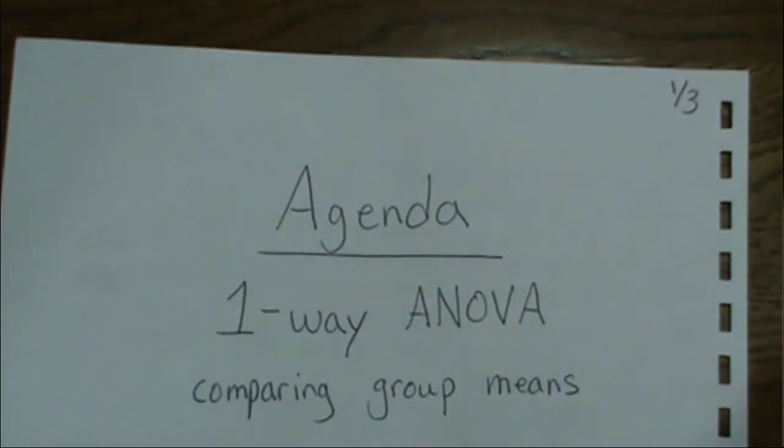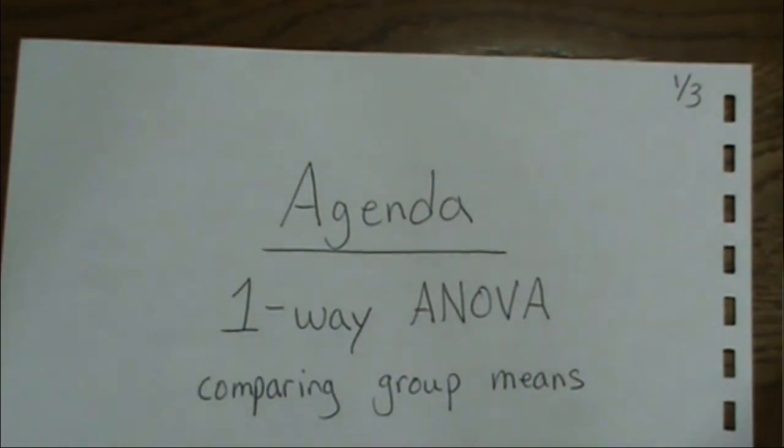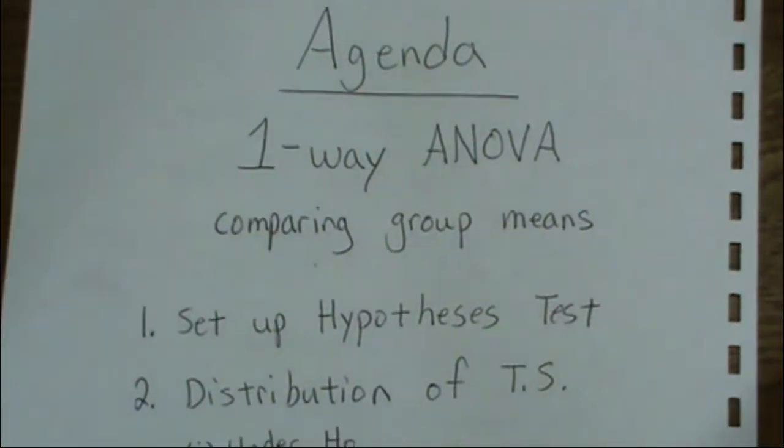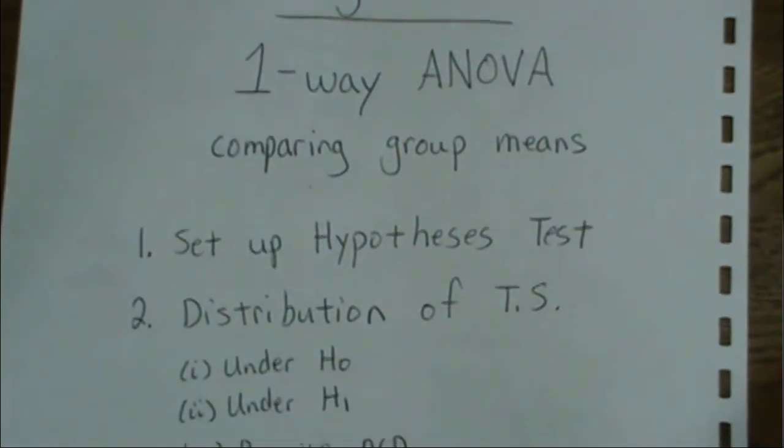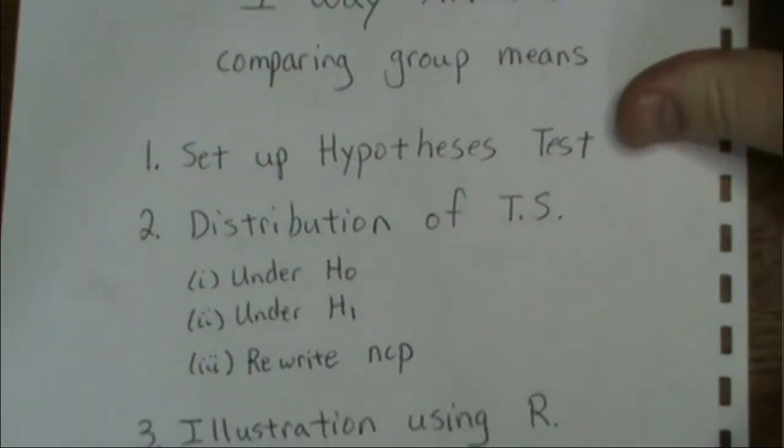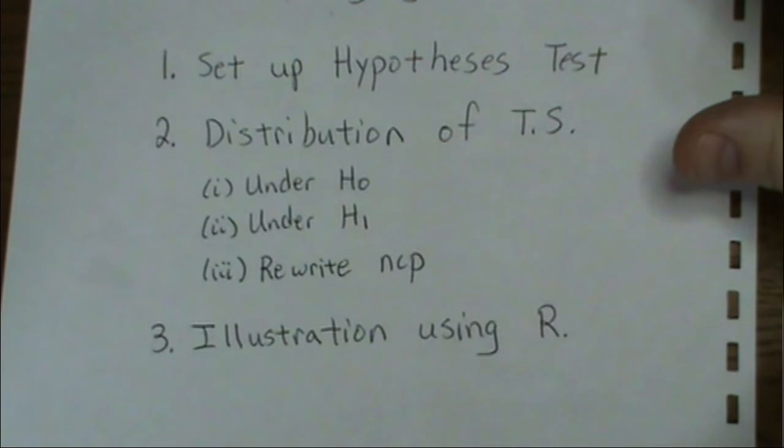The agenda for our one-way ANOVA presentation on power and sample size is this. The ultimate objective is we're going to compare the group means. We're going to set up the hypothesis, look at the distribution of test statistics under the null and alternative, and rewrite the non-centrality parameter in the way that the R statistical software package uses it. Then we're going to illustrate these within R.